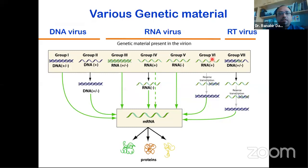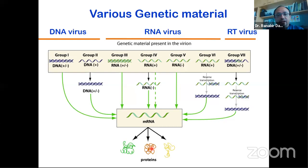Depending on the genetic material inside the virus coat, viruses are classified into different groups: DNA viruses, RNA viruses, or reverse transcriptase viruses. Importantly, all viruses must convert their genetic material into something called mRNA, or messenger RNA. From mRNA, viral proteins are made — proteins the virus needs to make copies of itself and its capsid. All required proteins are produced by the virus through this intermediate called messenger RNA.